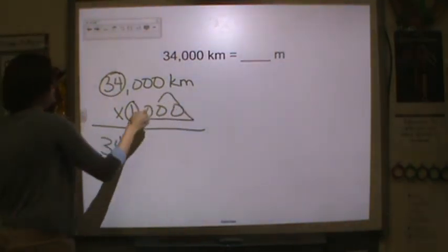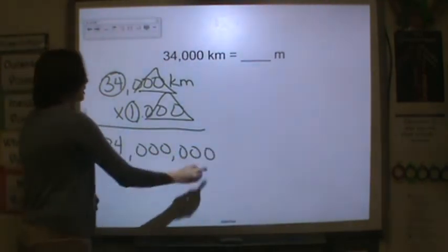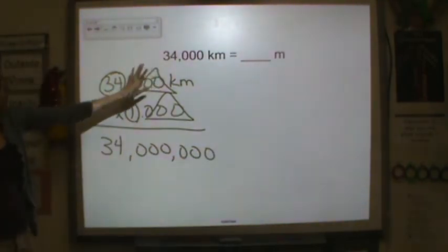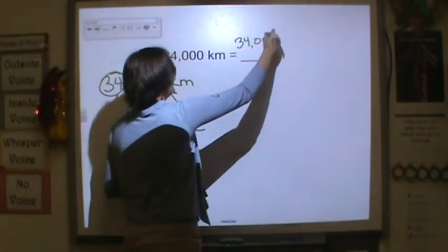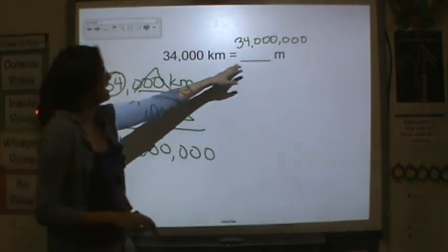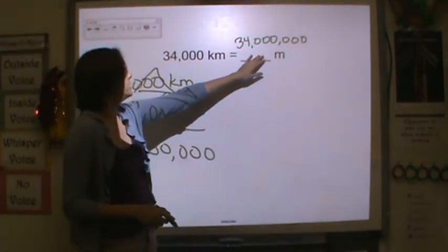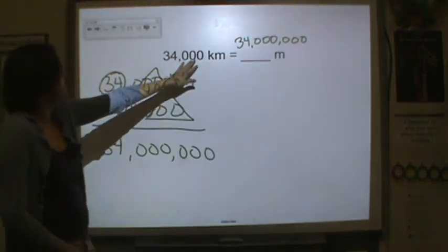Add one, two, three zeroes. So 34,000 kilometers is equal to 34 million meters. Meters are smaller than kilometers, so I'm going to have more of them if I'm going to represent the same amount in a bigger unit, which is kilometers.